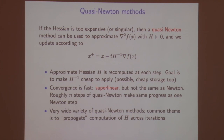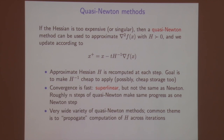Quasi-Newton methods come into play when the Hessian is too expensive to compute, too expensive to solve a linear system in, or singular. They approximate the Hessian with some other matrix H that is strictly positive definite, then update according to that matrix H. The goal is to make a linear system in H cheap to solve and also cheap to store, since with very large problems, N² storage may be too much.